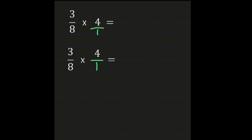Now that I have my whole number 4 written as a fraction — 4 over 1 — I'm ready to multiply my numerators. If you rewrite it, you can clearly see them lined up: your numerators are 3 and 4. So 3 times 4 is 12. Then our next step is multiplying our denominators, 8 and 1. 8 times 1 is 8.